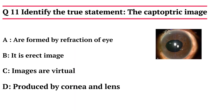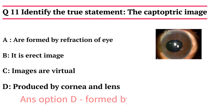Question 11: Identify the true statement regarding catoptric images. Options: A - it is formed by refraction of the eye, B - it is an erect image, C - it is a virtual image, D - produced by cornea and lens. The correct answer is Option D. They are also called Purkinje-Sanson images, formed by four surfaces: images 1 and 2 from the anterior and posterior surface of the cornea, and images 3 and 4 from the anterior and posterior surface of the lens.